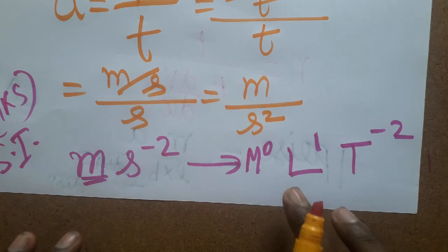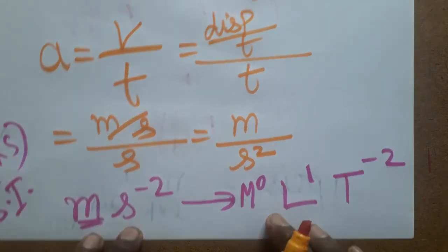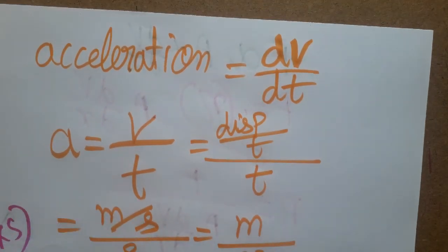So the dimensional formula is L T minus one. SI unit is meter second minus two. If you like my channel, please subscribe. Thank you everyone.